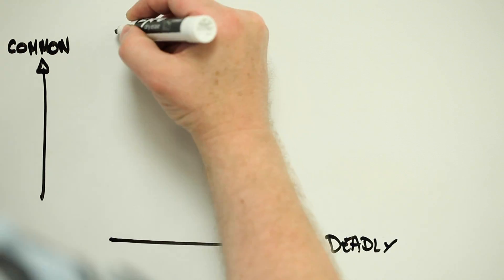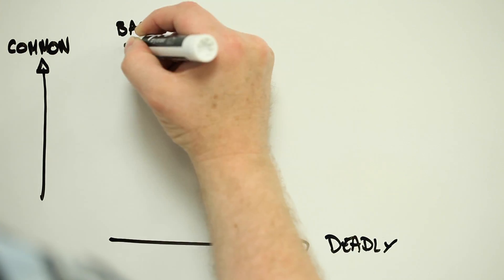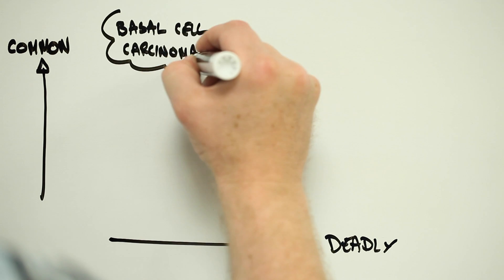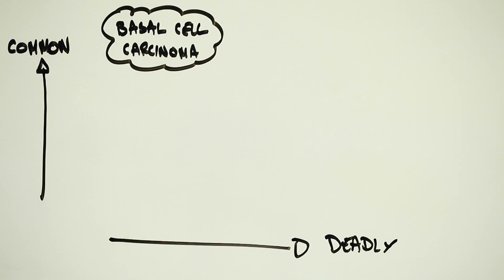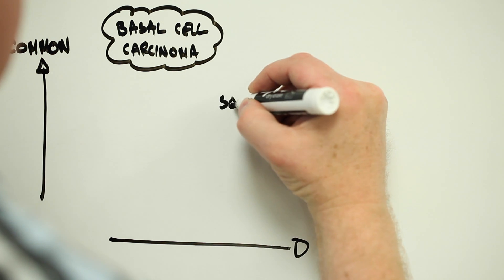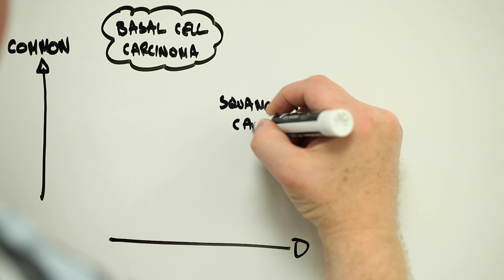The most common form of skin cancer is basal cell carcinoma, a cancer of the cells at the base of the outermost layers of the skin. Fortunately, basal cell carcinomas almost never spread and are readily treatable.